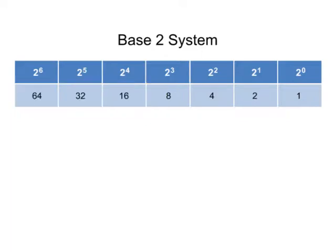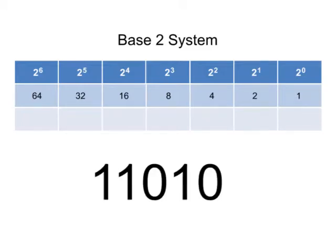When you work with digital equipment, converting between the binary and decimal numbering systems is often required. Let's take the binary number 1101001 and convert it to a decimal number equivalent.